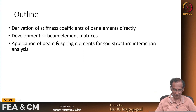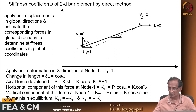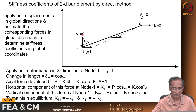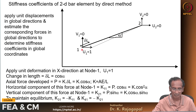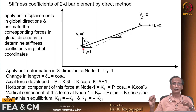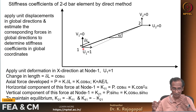Let us look at another method for deriving the stiffness coefficients. We take the same two-node bar element with four displacements: u_x1, u_y1, u_x2, u_y2. Node 1 and node 2, with angle alpha. We now apply the displacements directly in the global directions and then measure the forces developed in the respective directions.